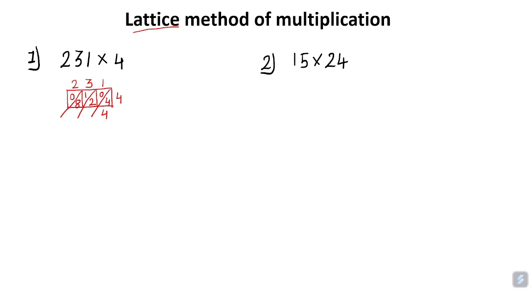Here between these two diagonal lines we have 2 and 0, so 2 + 0 = 2. Between these lines we have 8 and 1, so 8 + 1 = 9. Here we have 0. So our answer is 924.